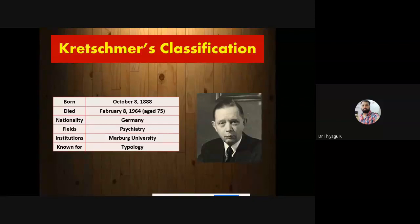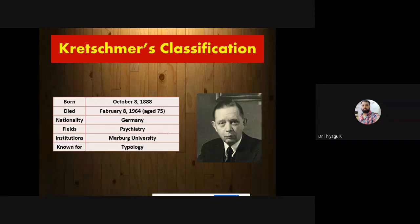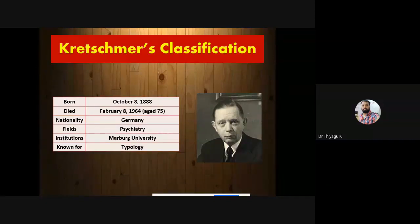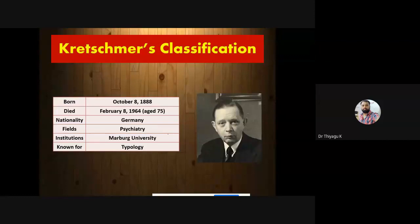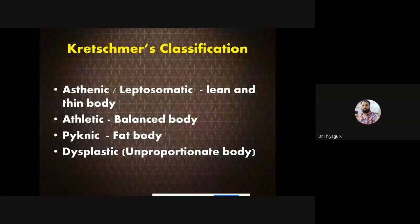Kretschmer is also not much observing normal people — he is also observing mentally disordered people only, and from this he generated this theory. Similarly, Sheldon also mostly observed delinquent people. Kretschmer attempted to find the correlation of physique and character from his studies on mental patients. He found that certain body types are associated with particular types of mental disorders. So while Sheldon highlighted certain characteristics, Kretschmer highlighted that there is some kind of mental disorder if the person has a very lean body, and so on.